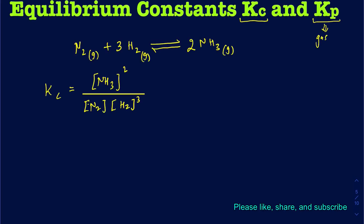If I want to express this equation in the form of partial pressures, I can write down the Kp. The Kp is still the same in terms of arranging products and reactants — products on top and reactants in the denominator — but instead of writing concentrations, I write partial pressures. So the partial pressure of NH3 squared, divided by the partial pressure of N2 times the partial pressure of H2 to the power 3. That's your Kp expression for this reaction.